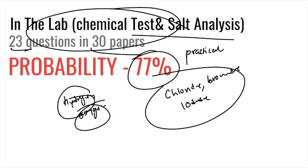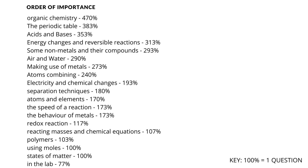Those are the probabilities for all topics in the IGCSE chemistry syllabus. There's also an order of importance — the key is that 100% means one question per paper. Organic chemistry has about five questions, the periodic table about four, and so on. Prepare according to this and focus on the higher-probability topics. If you'd like a similar video for physics or economics, hit like, comment below, and subscribe.